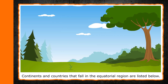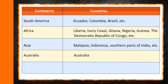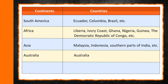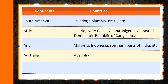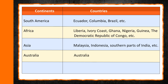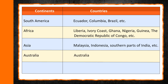Continents and countries that fall in the equatorial region are listed below. South America: Ecuador, Colombia, Brazil, etc. Africa: Liberia, Ivory Coast, Ghana, Nigeria, Guinea, the Democratic Republic of Congo, etc. Asia: Malaysia, Indonesia, southern parts of India, etc. Australia.